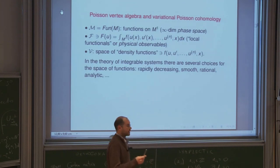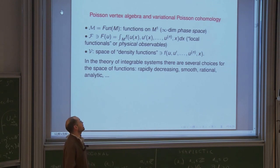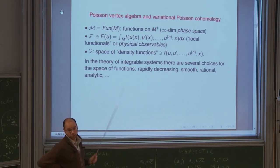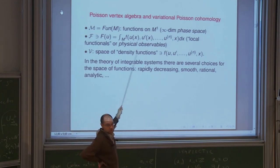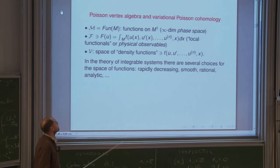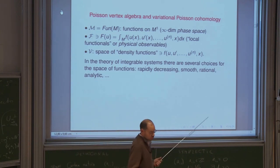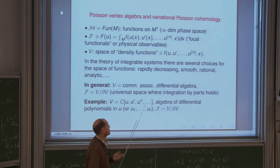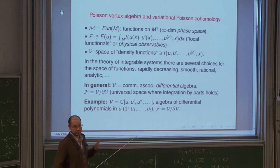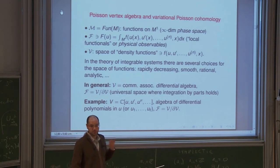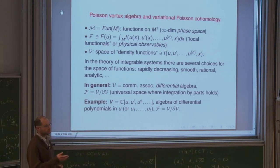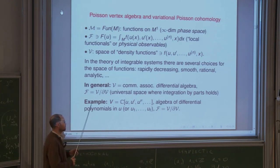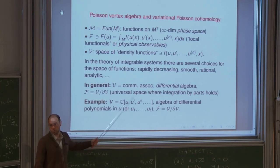Now we do the infinite-dimensional case and move to Poisson vertex algebras. We fix a certain algebra V — you might think of starting with an infinite-dimensional manifold of functions on a manifold M and considering the space of all local functionals, which are expressions of the type: integrals of functions of u and finitely many derivatives. More formally, we take V to be an arbitrary commutative associative differential algebra. The space of local functionals F is the quotient V mod dV, where integration by parts can be applied.